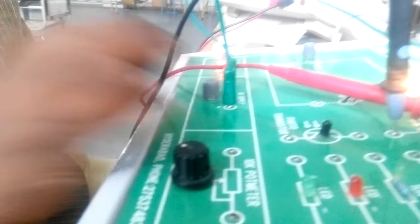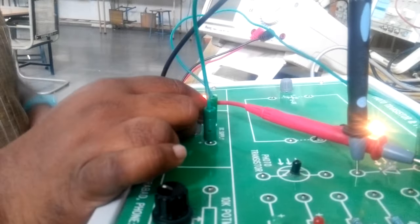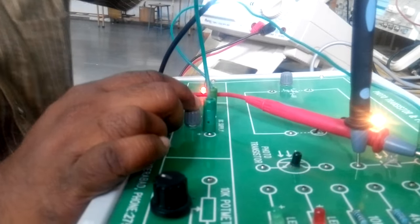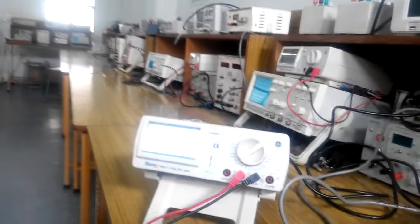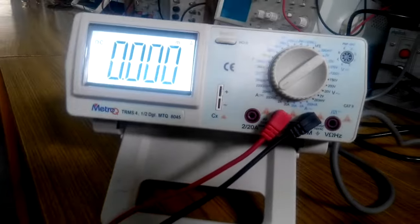Now switch on the kit, adjust the voltage in your voltmeter to zero. The reading in the ammeter also will be zero.